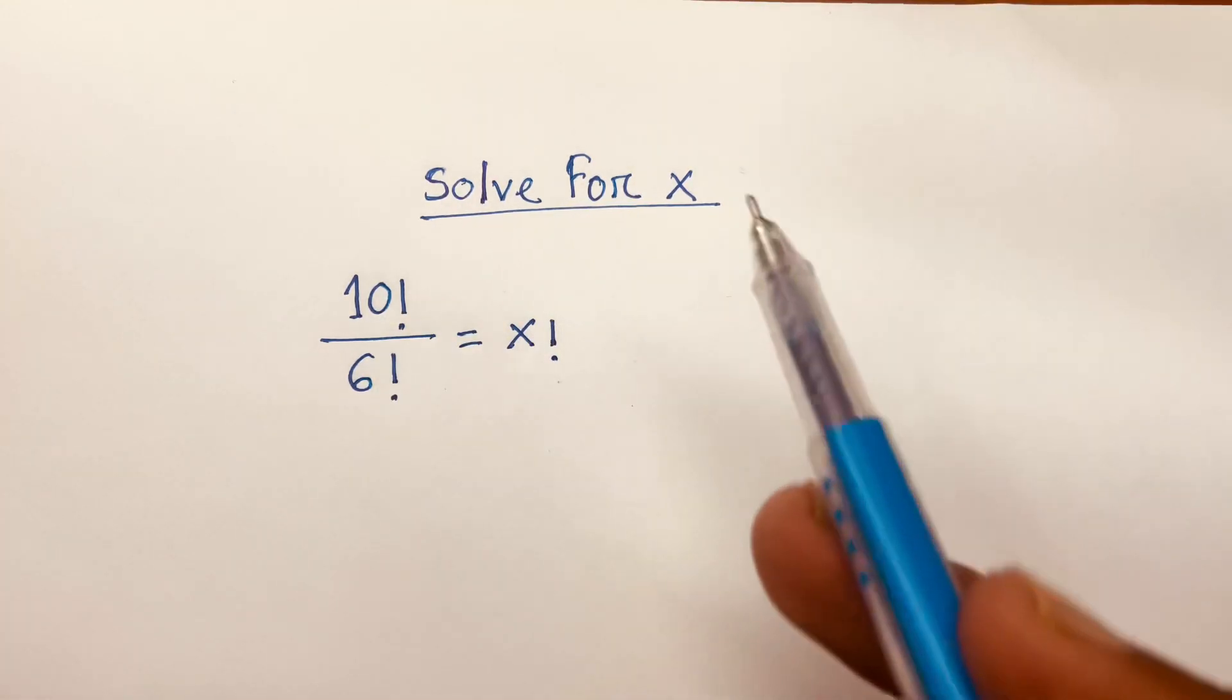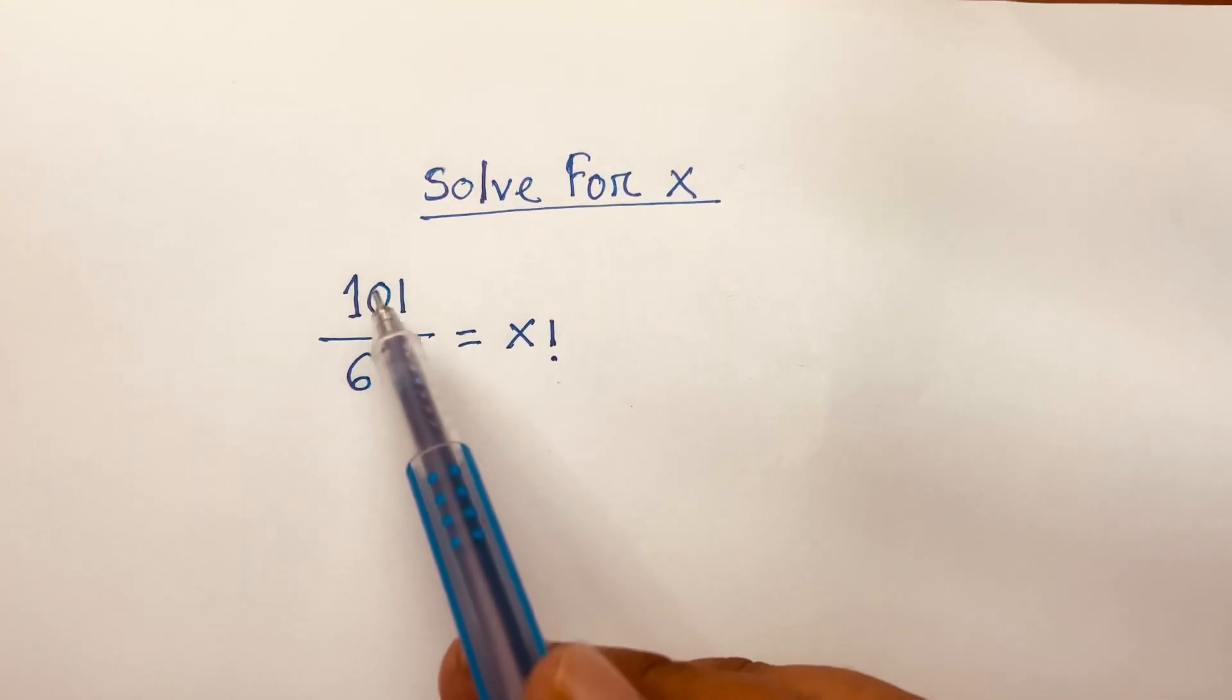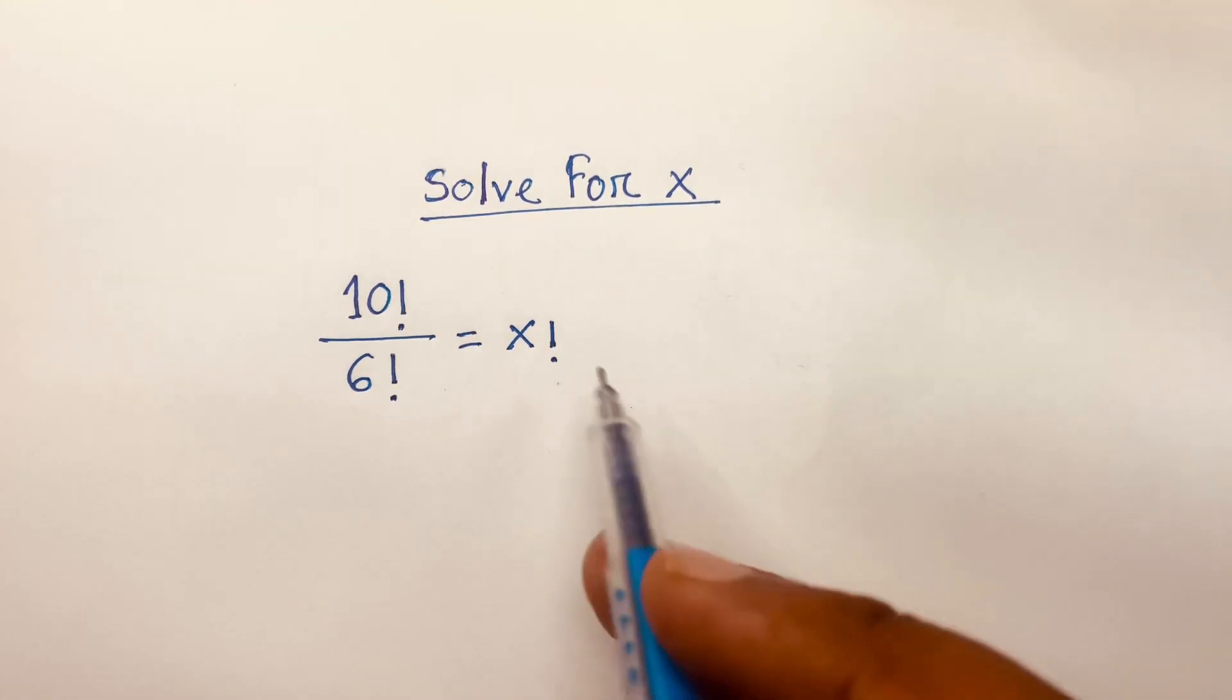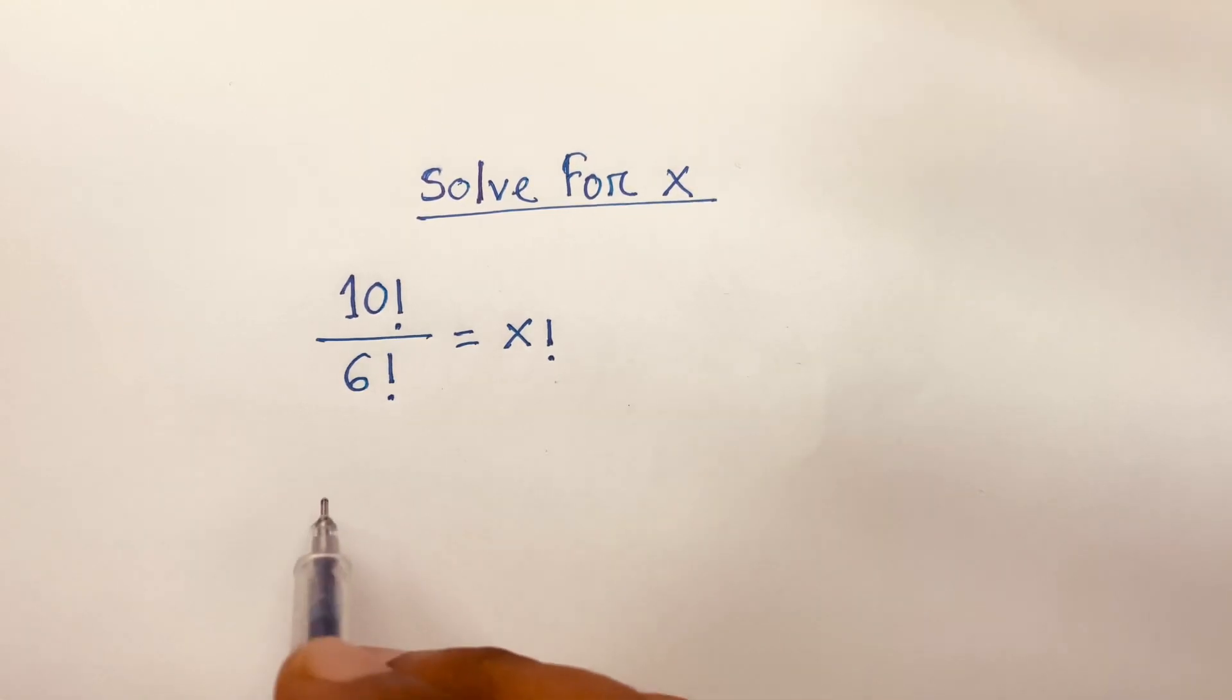Solve for x. How to solve this factorial question? 10 factorial over 6 factorial is equal to x factorial. So we'll find out what is the value of x.